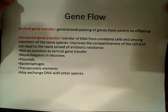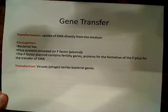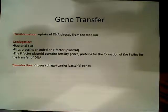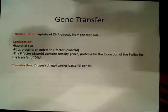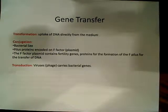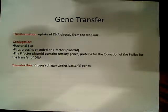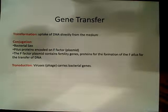The next point is gene transfer. There are three types I'm going to talk about. The first is transformation, which is the uptake of DNA directly from the medium. The second is conjugation, also known as bacterial sex — you have the F-factor plasmid, which contains fertility genes and proteins for the formation of the F-pilus for DNA transfer. Cells are called F-positive if they possess this plasmid and are able to form the sex pilus and transfer genetic material.